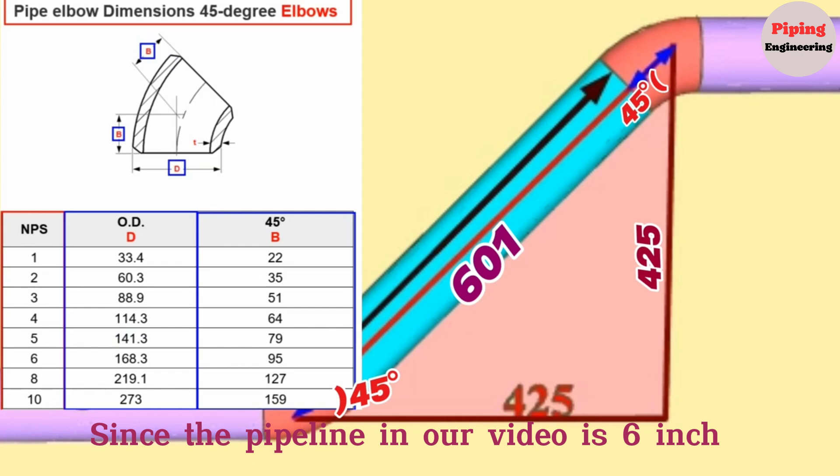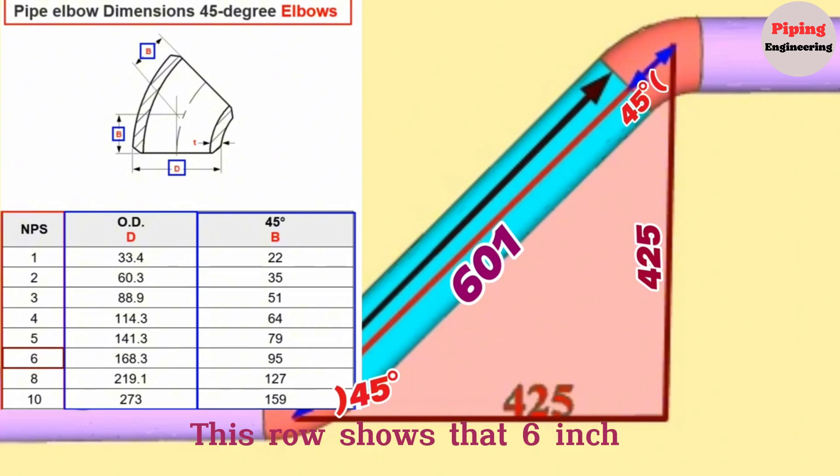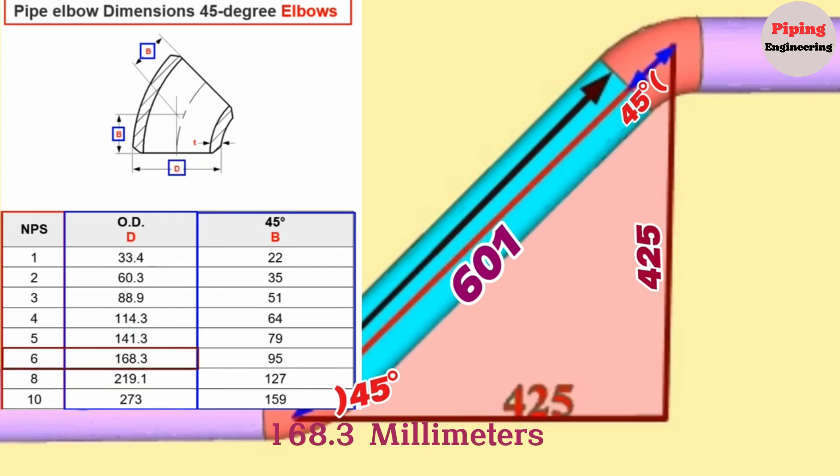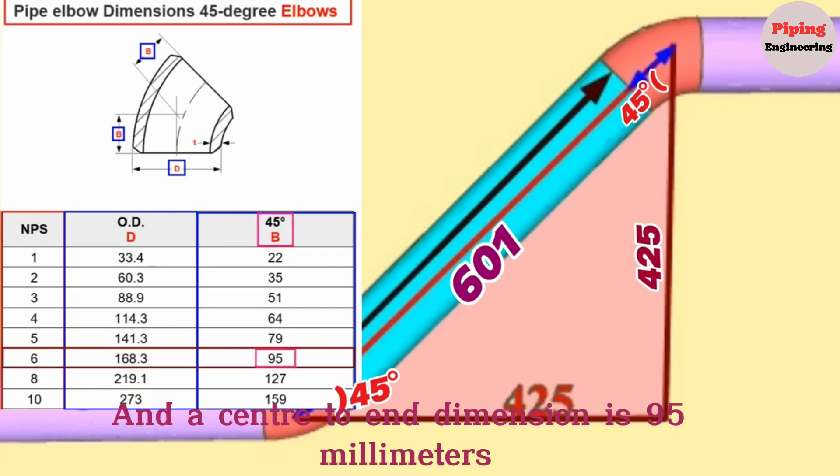Since the pipeline in our video is 6 inches, we will look at the row written as 6 inches in the NPS column. This row shows that 6-inch butt welded 45-degree elbows have an outside diameter of 168.3 millimeters and a center to end dimension of 95 millimeters.